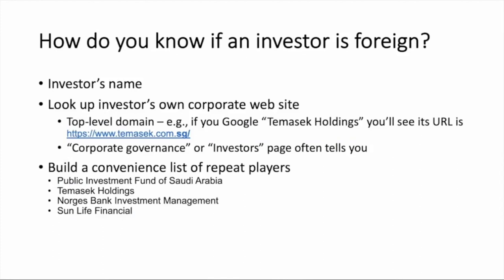Now let's look at Morgan Stanley, the financial firm. For Morgan Stanley, you can see that 22.6 percent of its shares are owned by Mitsubishi UFJ Financial Group Incorporated. When you Google that, you find it is a company based in Japan — a Japanese bank holding and financial services company headquartered in Chiyoda, Tokyo. So Morgan Stanley is 22.6 percent owned by this particular foreign investor.